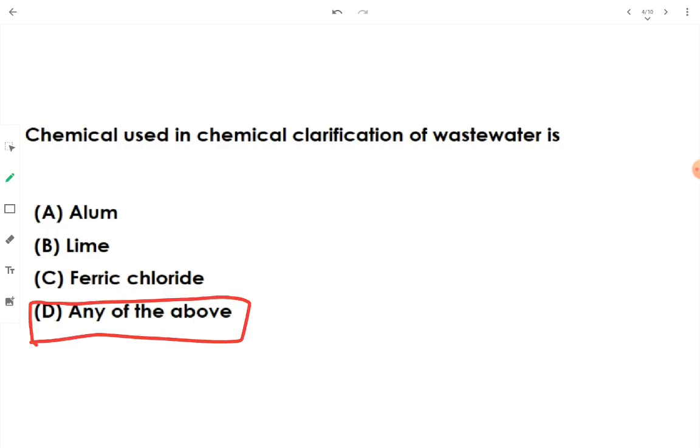We can use any one, which can be alum, that has chemical formula as Al2SO4 by 3 dot 18H2O. Or, we can go with lime, has chemical formula as CaOH by 2. Or, we can go with ferric chloride also, which has chemical formula as FeCl3.